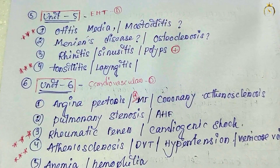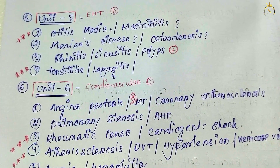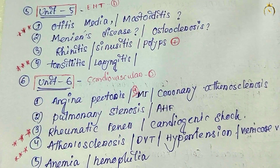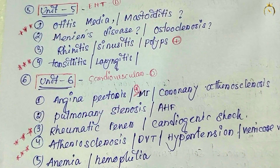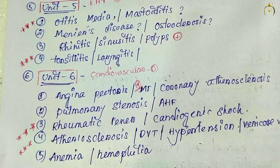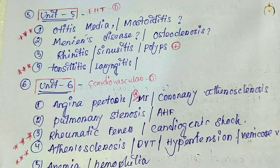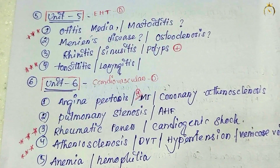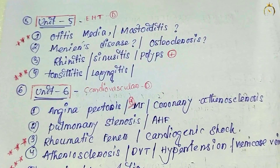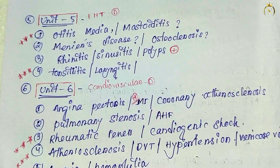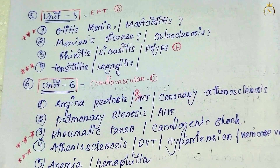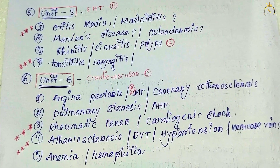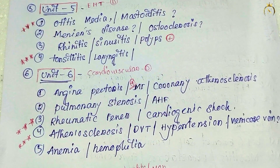Unit 5 covers ENT. Otitis media and osteoporosis are the most important. Many ear/nose/throat diseases like mastoiditis, tonsillitis, and laryngitis are also important. These questions are very easy — for example, tonsillitis: definition of inflammation/infection of the tonsils, causes such as viral or bacterial infection, medical management, and nursing management. Very straightforward to answer.